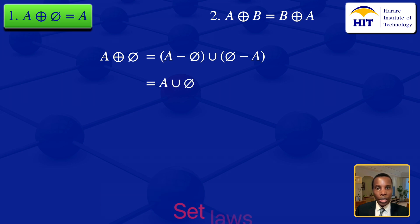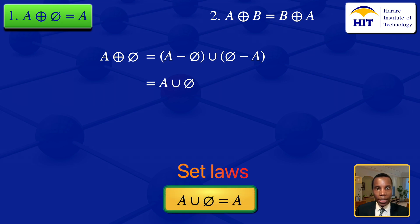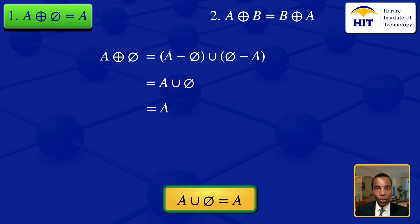We will now go on and use set laws. We know that the union of a set and the empty set gives us the set itself, so this union simplifies to the set A. So that equals A. What we have shown is that the symmetric difference of A and the empty set equals the set A.